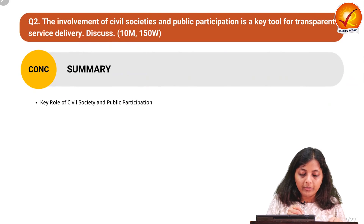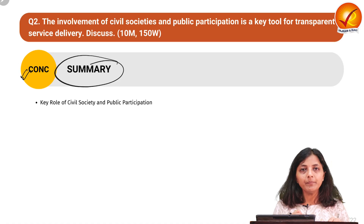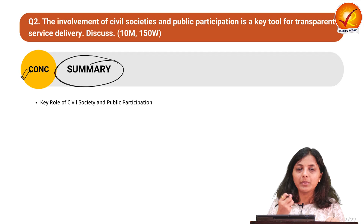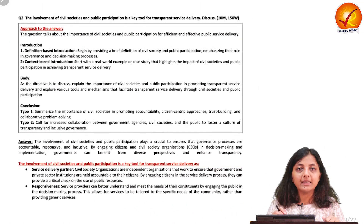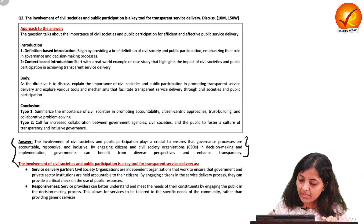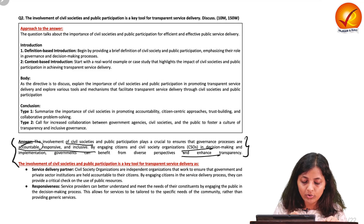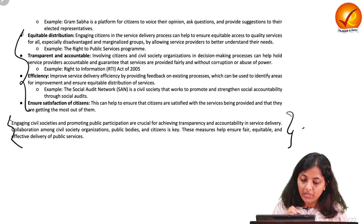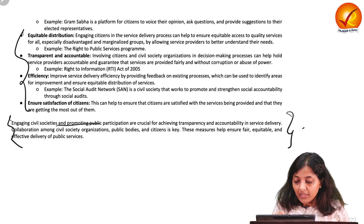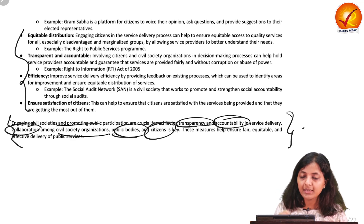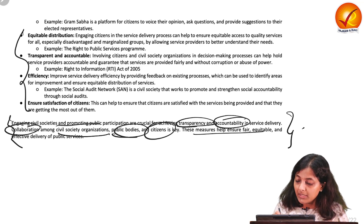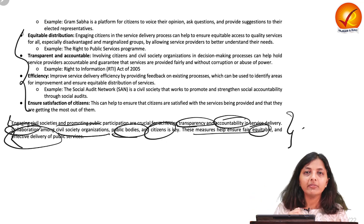In conclusion for question two, civil society and public participation have a major role in ensuring transparency and accountability in governance. The model answer states that engaging people is crucial for achieving transparency and accountability in service delivery, and we need more collaboration among civil society organizations, public bodies, and citizens. These measures ensure fair, equitable, and effective delivery of public services.